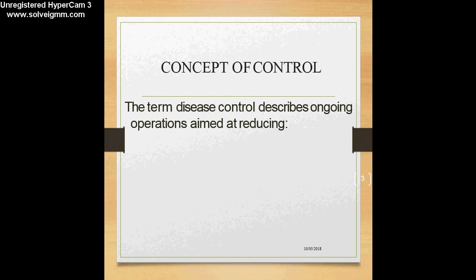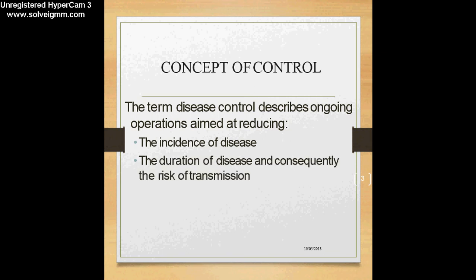When we use the term disease control or control of diseases, it describes activities which are aimed at reducing the incidence of disease. Incidence refers to occurrence of new cases of a disease, so when we say that a particular disease has been controlled in the community, it means that there are no longer new cases of the disease occurring.